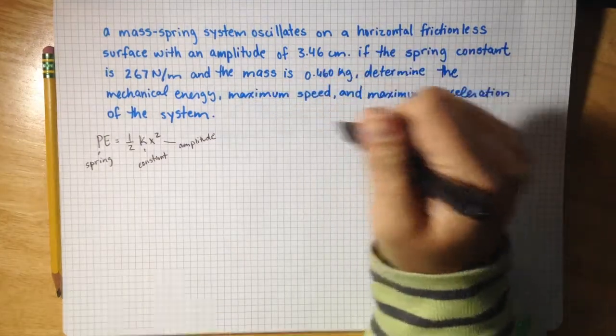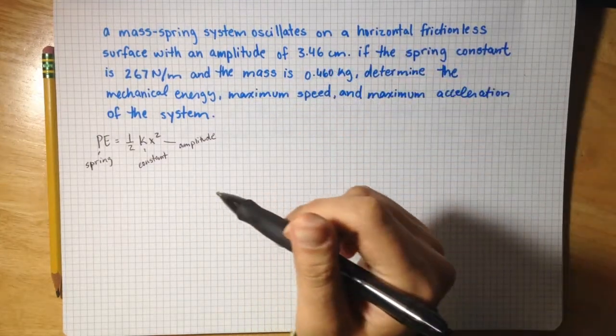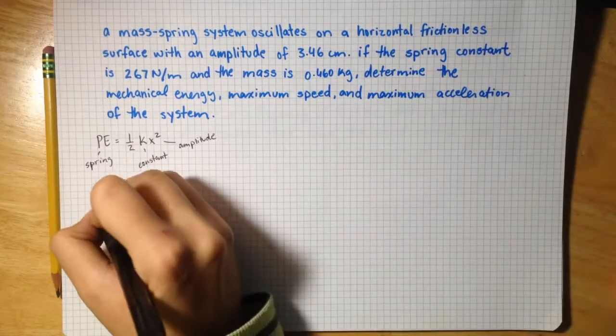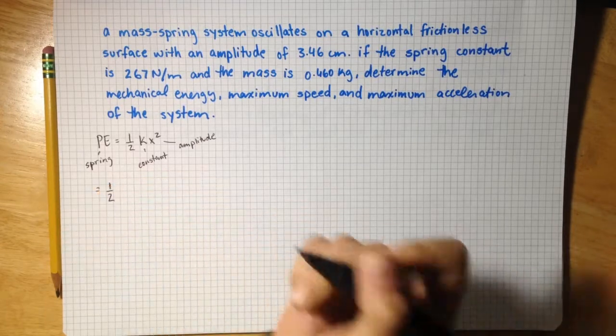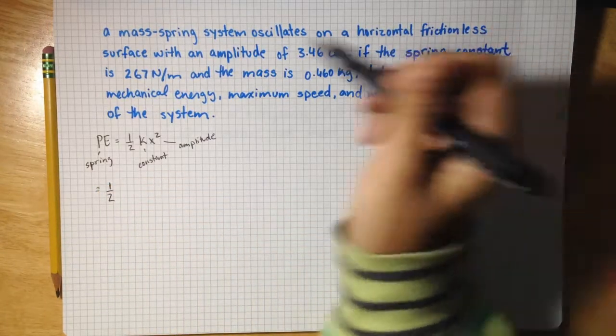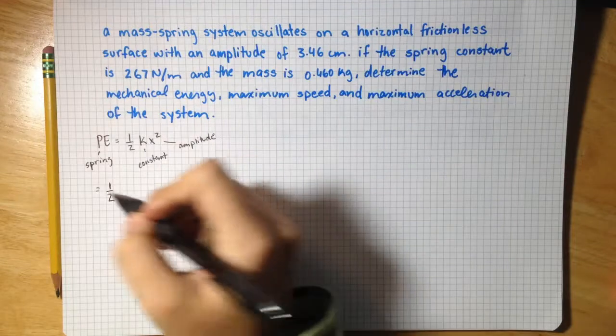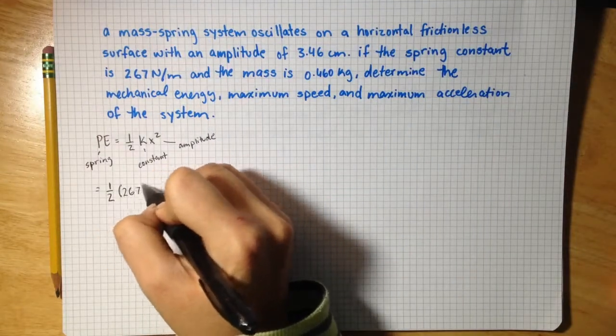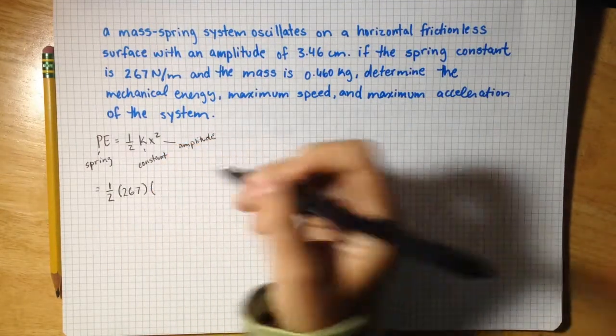So plugging numbers from this into this, I am going to get one-half times the spring constant, which they tell us is 267 times the amplitude.